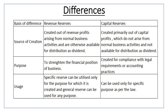This is a difference in a table from the NCERT textbook. The basis of difference between revenue reserve and capital reserve: First — source of creation. Revenue reserve is created out of revenue profits which arise from normal operating activities. Capital reserve is created out of capital profit, not from normal business activities.